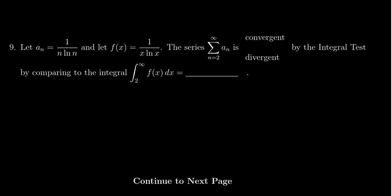In this video, we provide the solution to question number 9 for practice exam number 4 for Math 1220. We're given a sequence a sub n is equal to 1 over n times the natural log of n.